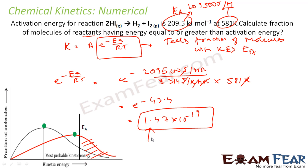Solving e to the power minus 43.4 gives approximately 1.4 times 10 to the power minus 19. That means only this tiny fraction of molecules has kinetic energy greater than the activation energy. This explains why many reactions are slow at low temperatures — very few molecules are capable of reacting. Once you increase the temperature, more molecules become capable of reacting and the reaction rate increases.